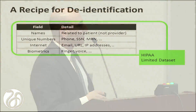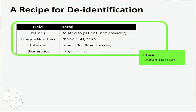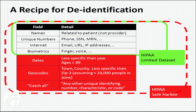Safe harbor's list of 18 items is actually an artifact of the definition of a limited data set under HIPAA. A limited data set specifies things that are taboo: names of patients but not providers, unique numbers like social security numbers, medical record numbers, phone numbers, anything internet-related, and biometrics. Note that DNA has not been designated a biometric under HIPAA. Safe harbor extends this by requiring you to drop dates to year-level only, top-code elderly individuals at 89 and above, remove specific geographic regions below 20,000 people, and remove any other unique identifying number, characteristic, or code.